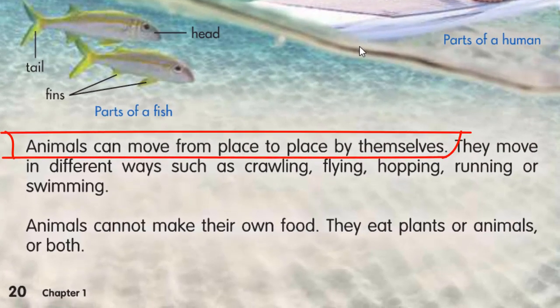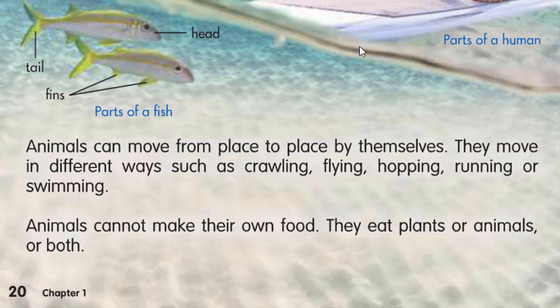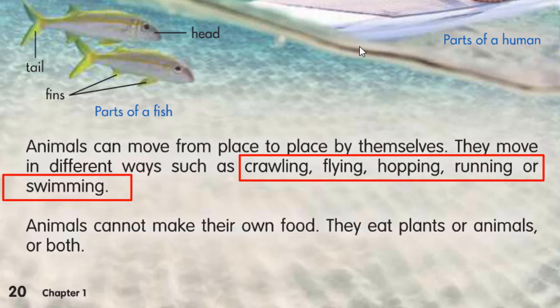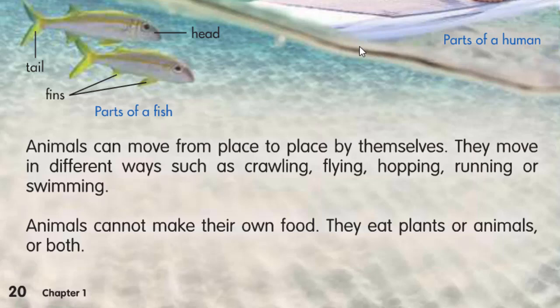Animals can move from place to place by themselves. Jadi animals itu bisa berpindah dari satu tempat ke tempat lainnya dengan sendiri, tanpa bantuan yang lain. Cara mereka bergerak itu bermacam-macam — they move in different ways such as crawling, flying, hopping, running, or swimming. Ada yang crawling — merangkak, flying — terbang, hopping seperti kangguru, running — berlari, or swimming — berenang.